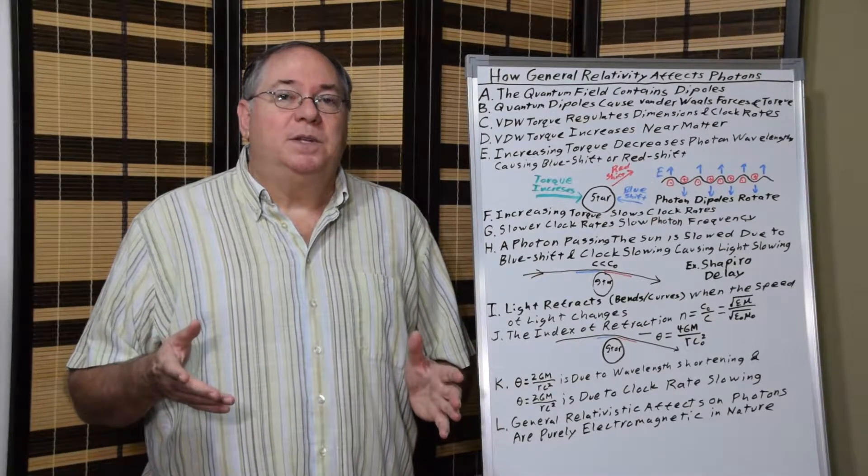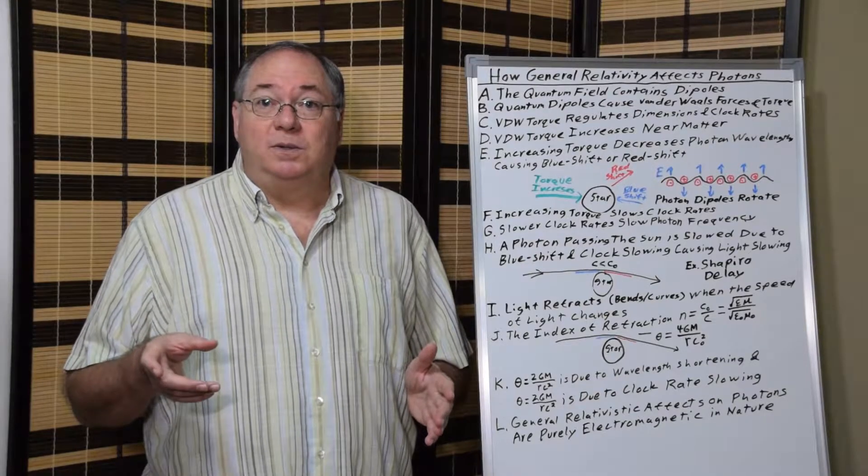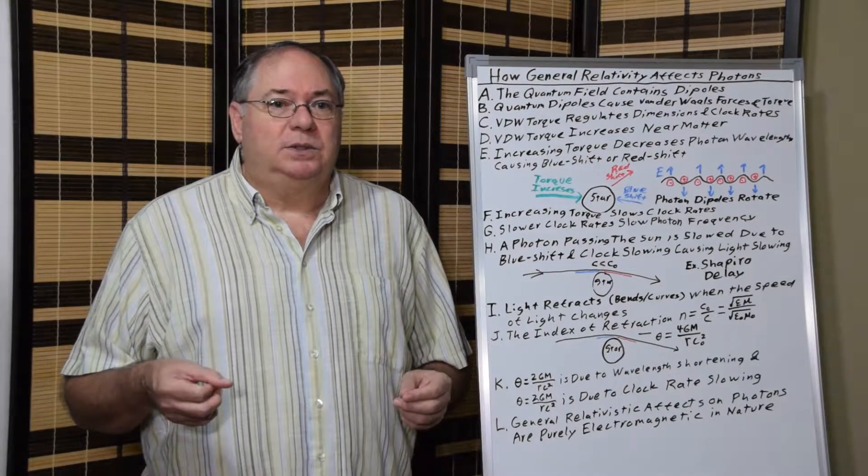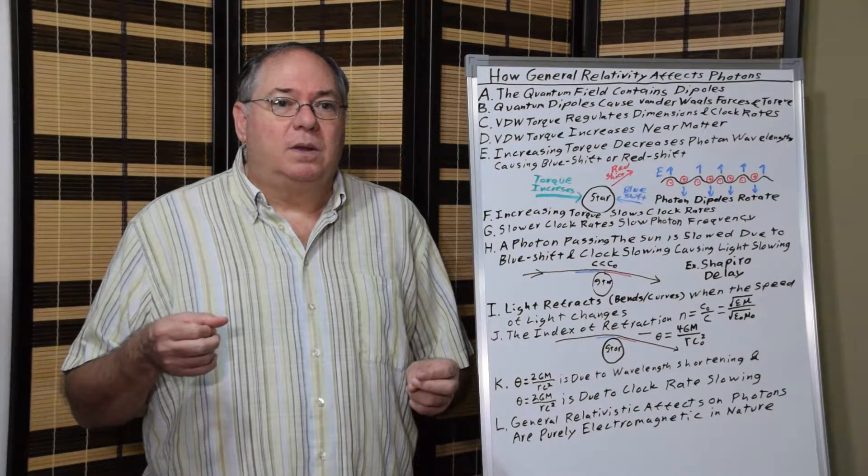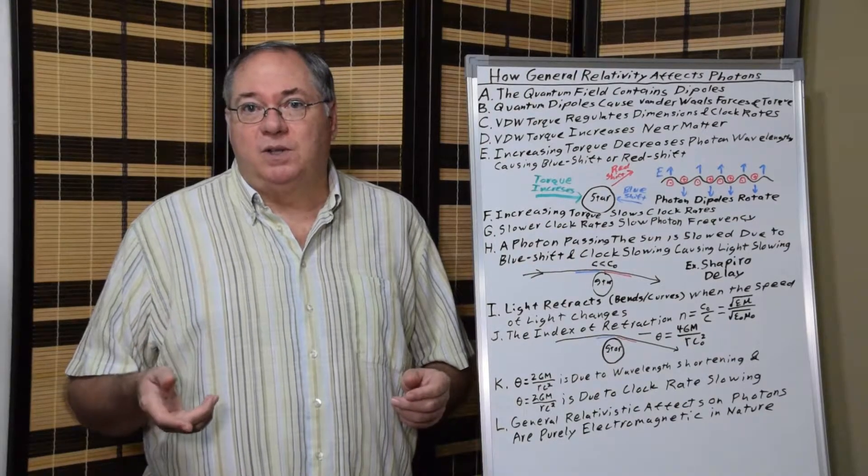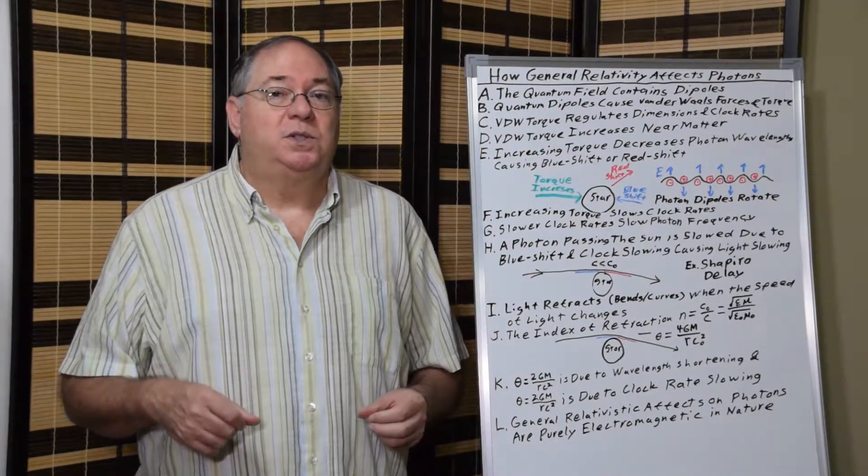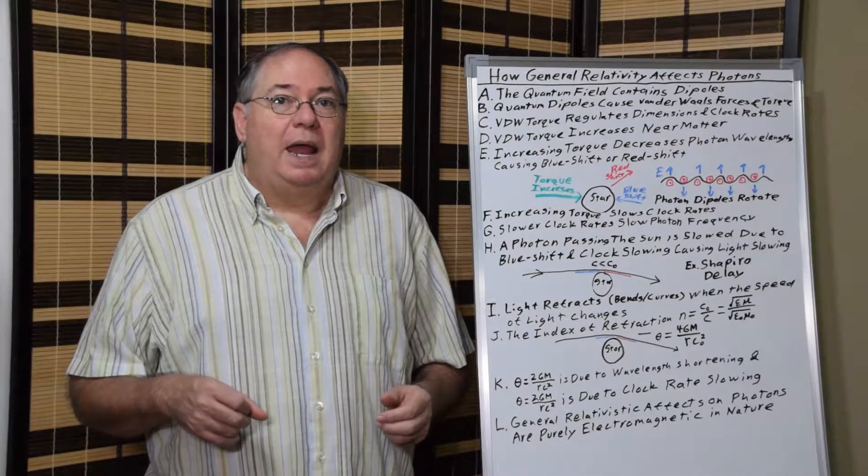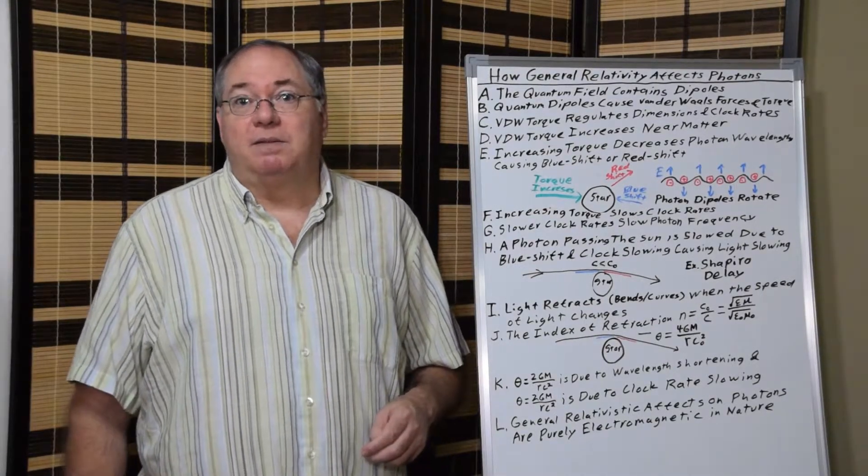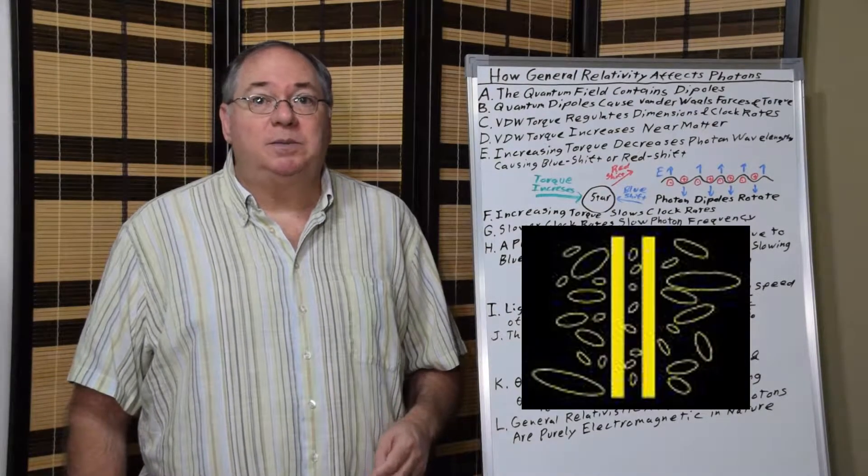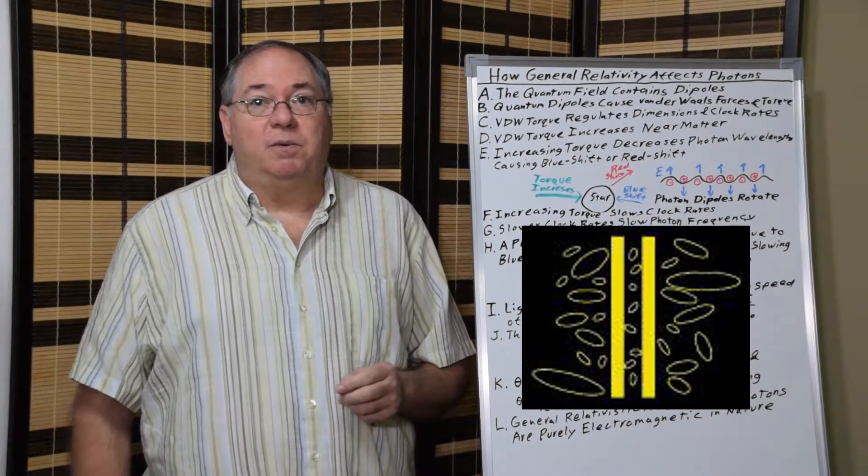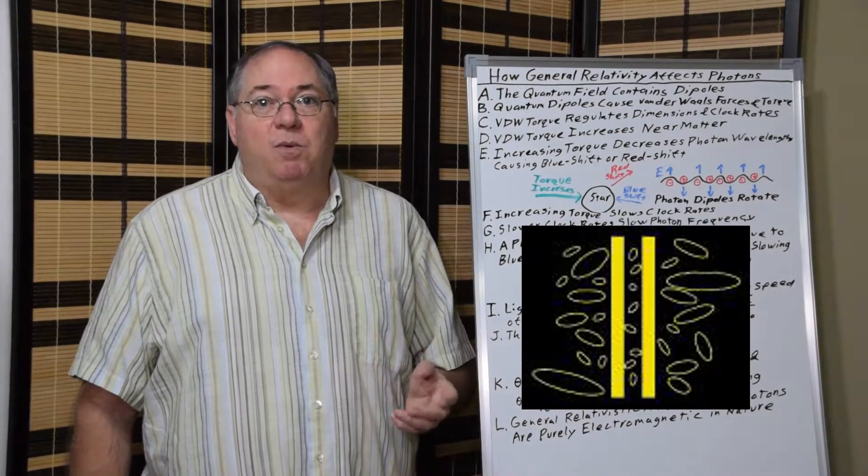What happens between these dipoles is you get van der Waals forces. So quantum fluctuations produce van der Waals forces and van der Waals torque. We know that they're van der Waals forces because that's confirmed by the Casimir effect.